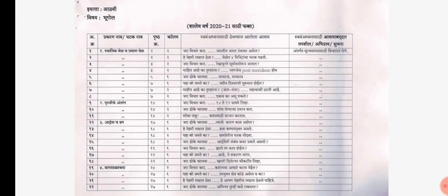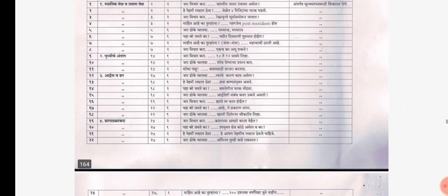In chapter number 2, you have page number 14 — the activities on the first and second column are cancelled.